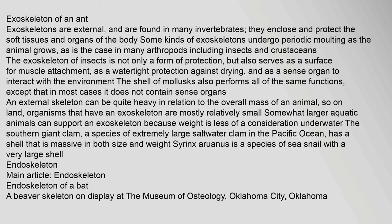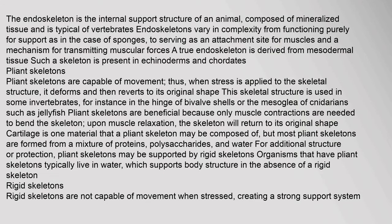The endoskeleton is the internal support structure of an animal, composed of mineralized tissue, and is typical of vertebrates. Endoskeletons vary in complexity from functioning purely for support, as in the case of sponges, to serving as an attachment site for muscles and a mechanism for transmitting muscular forces. A true endoskeleton is derived from mesodermal tissue. Such a skeleton is present in echinoderms and chordates.